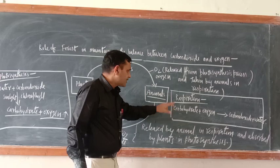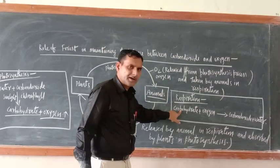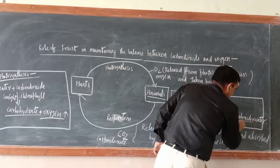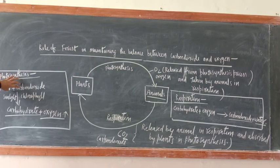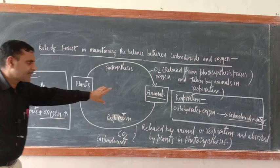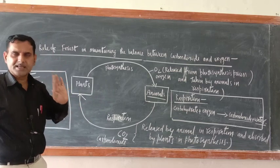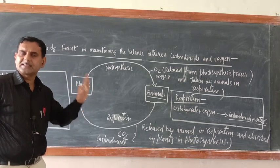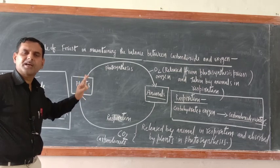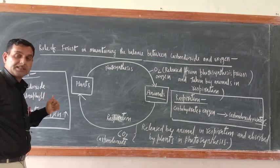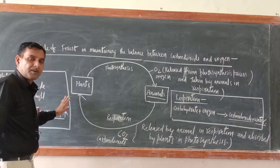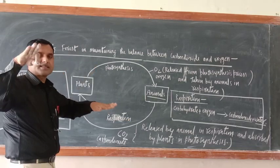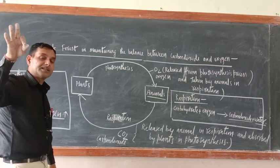So respiration and photosynthesis are responsible for maintaining the balance between carbon dioxide and oxygen gas. Who does photosynthesis? Plants. Who does respiration? Animals. Both should be in balance — the number of plants and the number of animals should be balanced. Then only will oxygen and carbon dioxide remain balanced in the atmosphere.